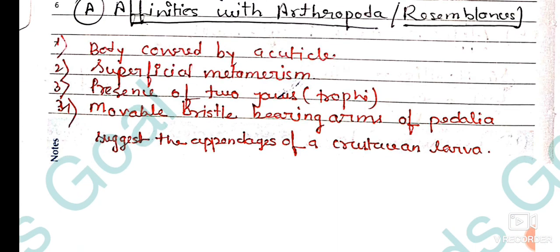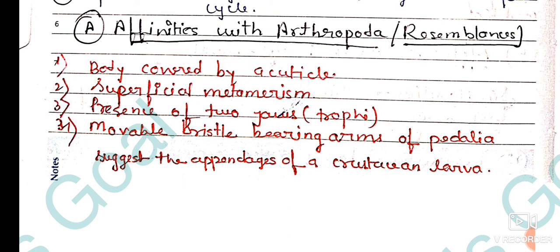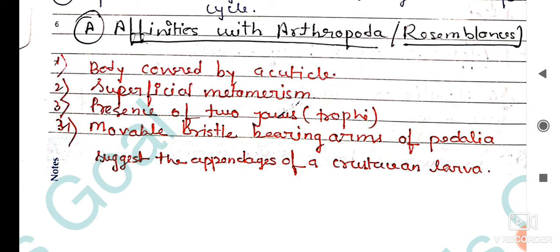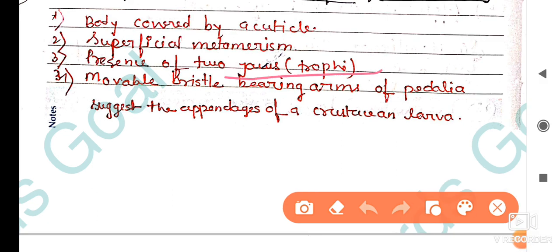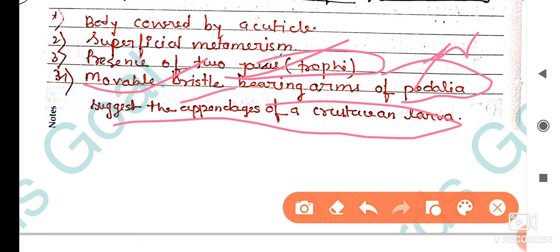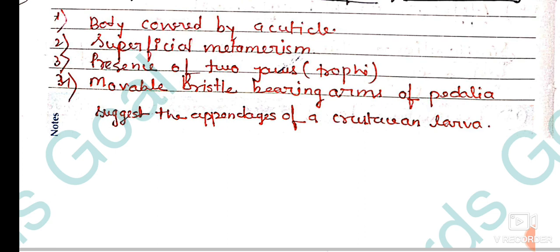Next are the affinities with Arthropoda. The similarity with Arthropoda includes: the body is covered by a cuticle, which is a similar feature. There is also the presence of two jaws, the trophi, used for grasping and grinding prey. Additionally, the movable bristle-bearing arms of pedalia, a class of Rotifera, suggest similarity to appendages of crustacean larvae, which are also bristle-bearing.